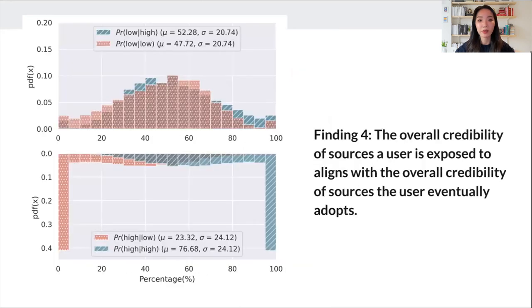Last but not least, we also discovered that the credibility of sources a person is frequently exposed to tends to match the credibility of sources they later adopt. In simple terms, the more we see it, the more we interact with it and potentially believe it. And if we're used to not questioning the source, we're even more at risk.